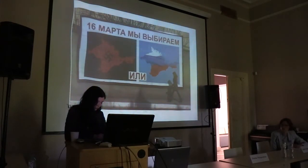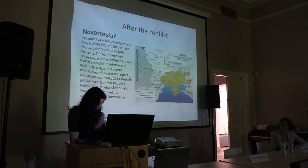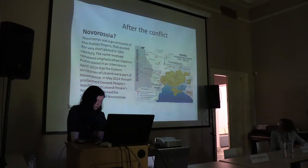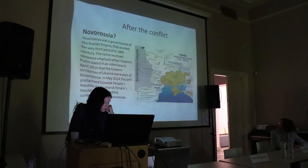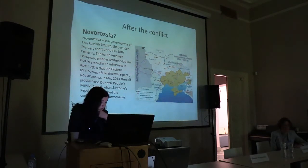The argument is: if we want to avoid fascism in Crimea, we have to vote for Russia. Not only maps of Crimea appeared — maps of Novorossiya were also disseminated in media. Usually only historians knew about Novorossiya. It was a governorate of the Russian Empire for a short time in the 18th century. The name received renewed emphasis when Vladimir Putin stated in April 2014 that the eastern territories of Ukraine were part of Novorossiya. The hidden rhetoric presents a thesis about the historical reality of Ukrainian territories to justify the annexation of eastern Ukraine.